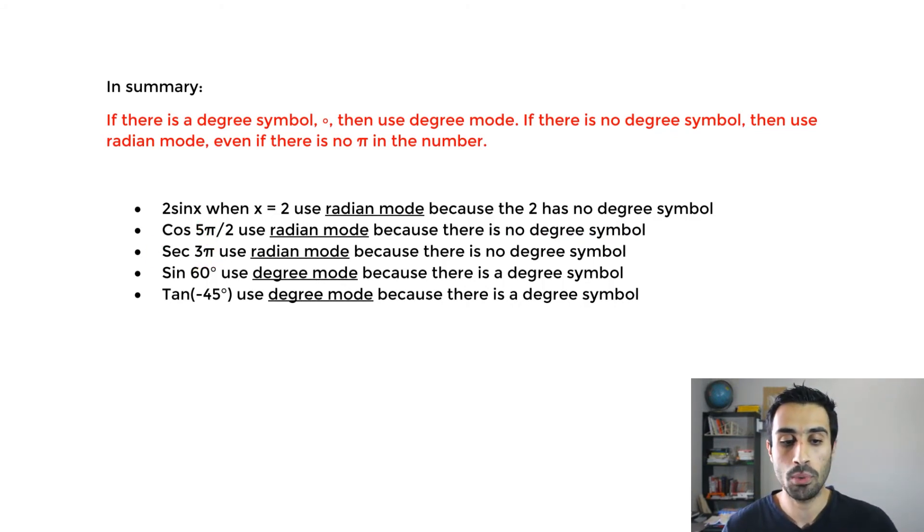This one, secant of 3π, radian mode because there's no degree symbol. Sine of 60 degrees. We use degree mode because there's a degree symbol. Tan of negative 45 degrees. We use degree mode because there's a degree symbol.